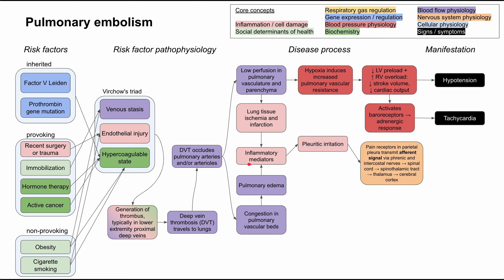These inflammatory mediators do a few things. Firstly, they can irritate the pleural lining in the distal portions of the lung and the pleura. The pain receptors in the parietal pleura then transmit afferent signals back to the brain — afferent meaning toward the central nervous system. This goes through the phrenic and intercostal nerves, then to the spinal cord, then through the spinothalamic tract to the thalamus, and then to the cerebral cortex. The patient will interpret this as pleuritic chest pain.